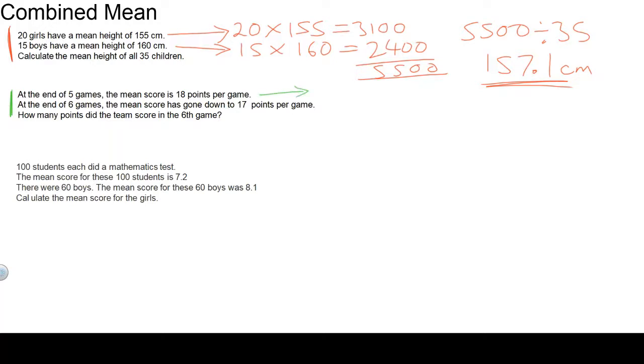First of all, work out the total of those five games. Five times 18 is 90. Do the same for six games. Six times 17 is 102. How many points did the team score in the sixth game? What you do now is work out the difference between 102 and 90. 102 take away 90 leaves you with 12. So the sixth game had 12 points.